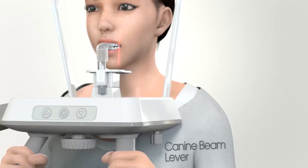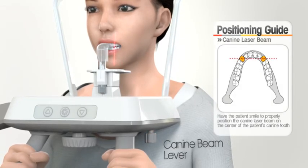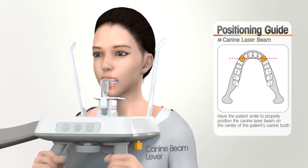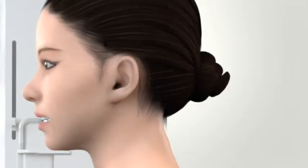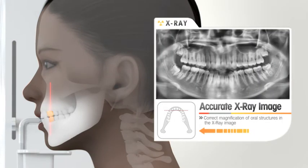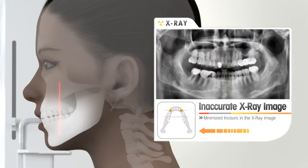Match the canine laser beam at the center of the patient's canine teeth by adjusting the canine beam lever. If the location of the canine beam is off the patient's canine position, the incisor image can be incorrectly magnified — meaning reduced or enlarged incisor images are achieved by an incorrect capture layer.